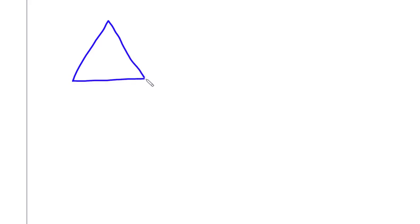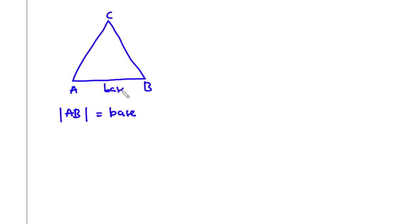So what is a triangle? A triangle is a three-sided plane figure. So assuming this is A, B, and C, then the side AB is called the base of the triangle. And then CD is called the height of the triangle.